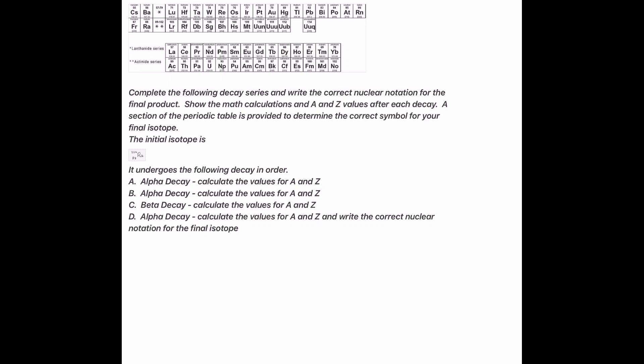In this problem, we're going to do a decay series for alpha and beta decay. They've given us the initial isotope, and it's kind of hard to see, but it's 224 over 88 Ra. It says that it undergoes the following decay in order.